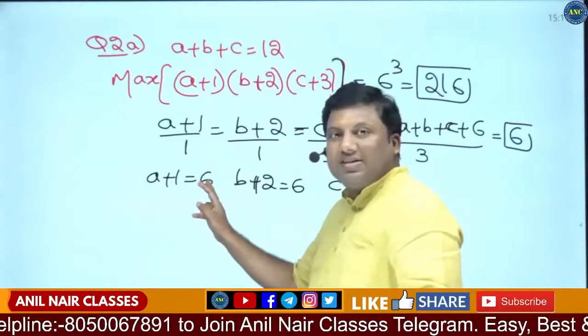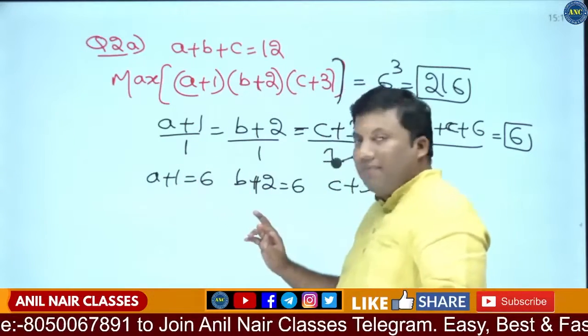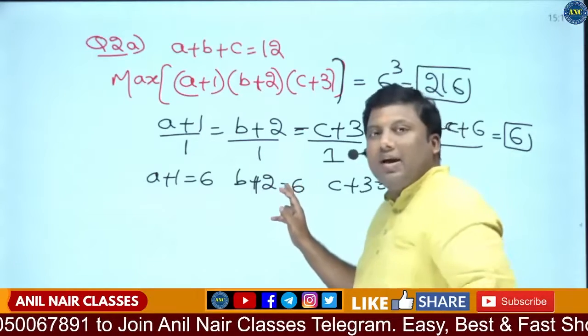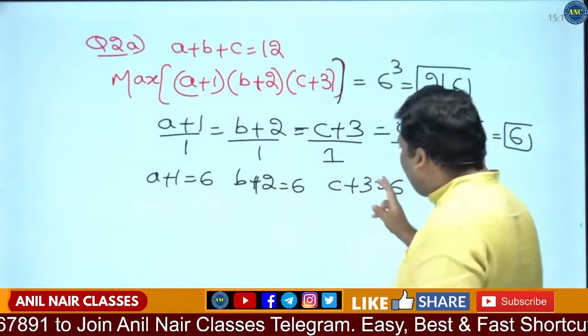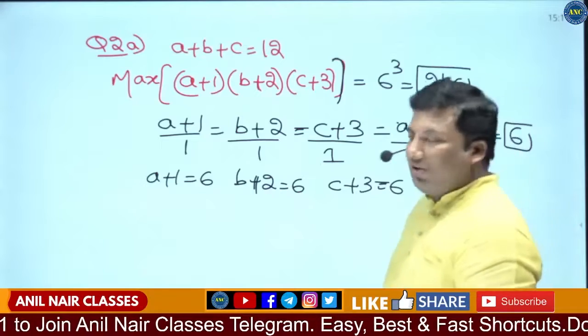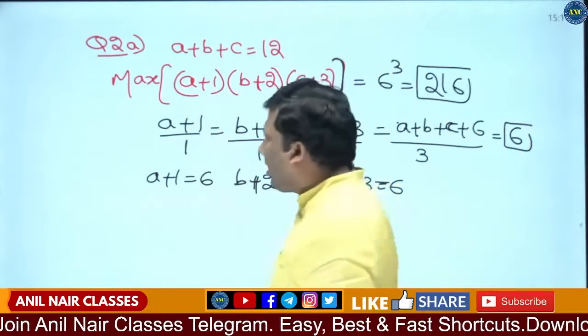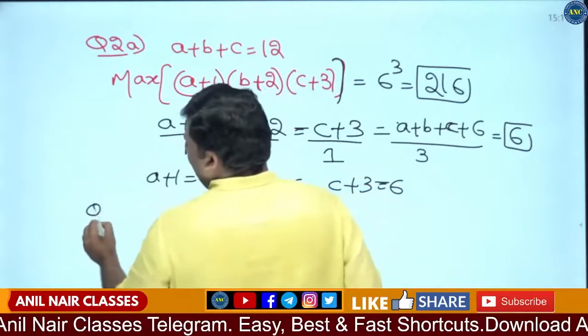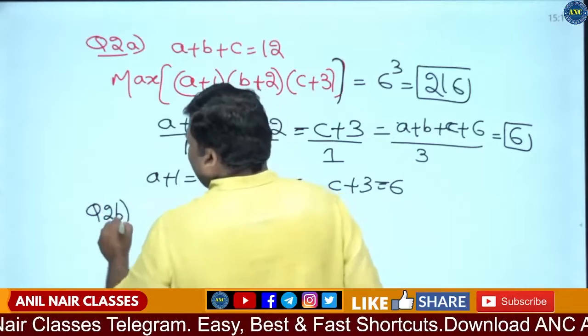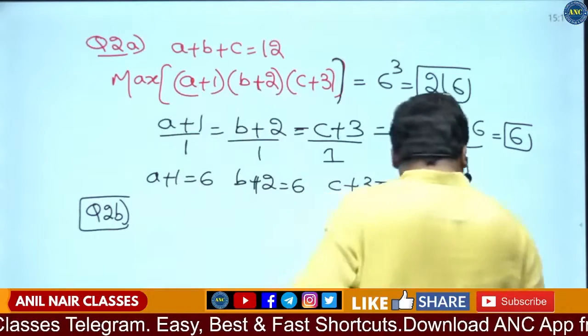At what value of A, B, and C? If A plus 1 is 6, A value will be 5. If B plus 2 is 6, B value will be 4. If C plus 3 is 6, C value will be 3. Question 2A - I hope it is clear. One concept: how to use it in algebra.